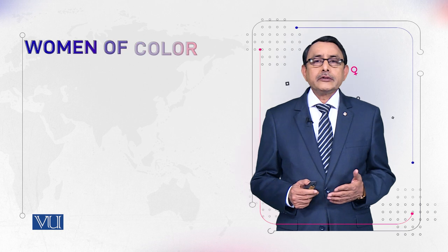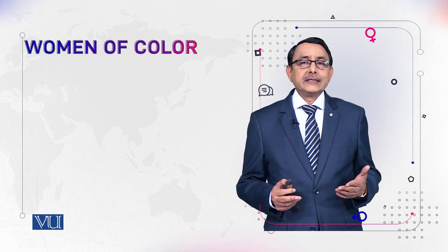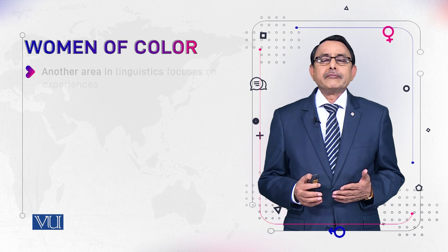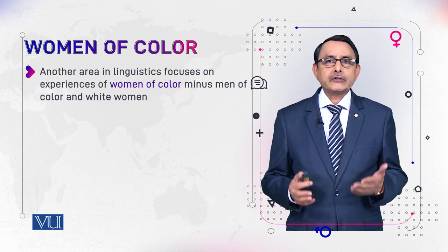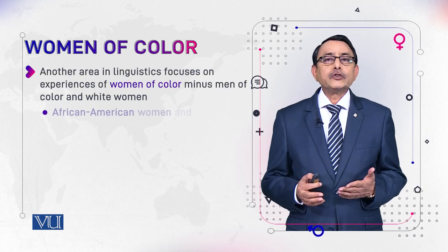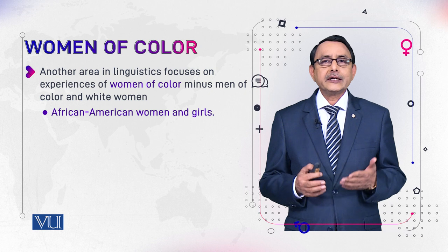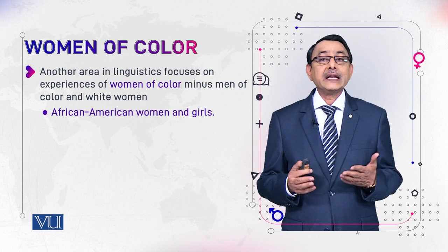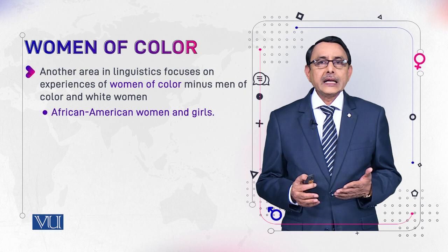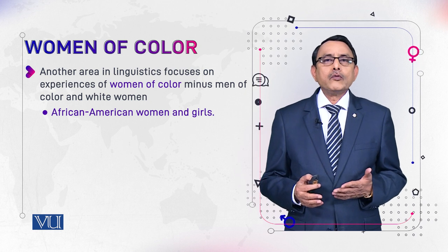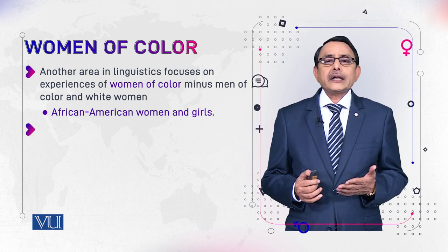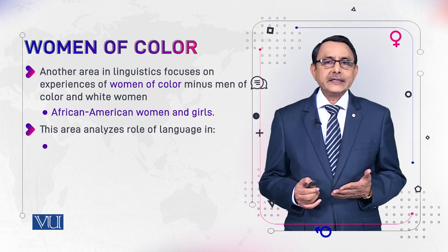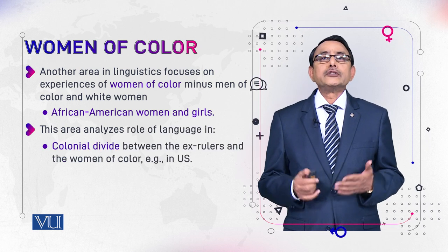In this module, you will know how the color of women makes them different in society and how discrimination is related with color. Here, by color we mean black color. It doesn't include white people. Actually, there is a history behind it, and that is colonial history.